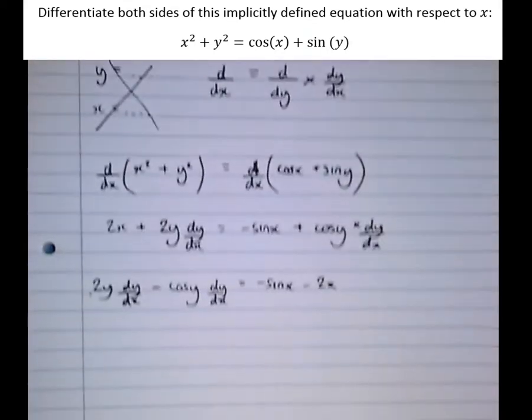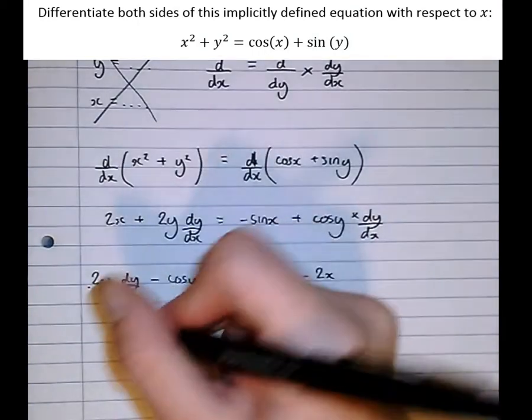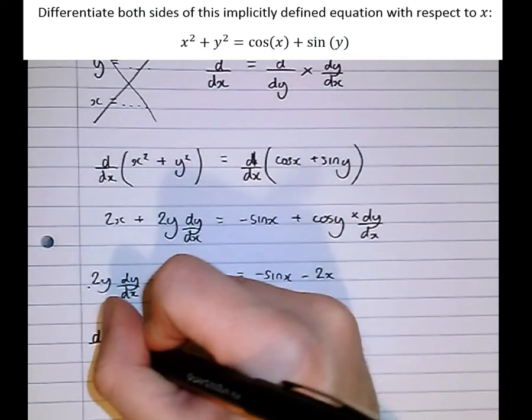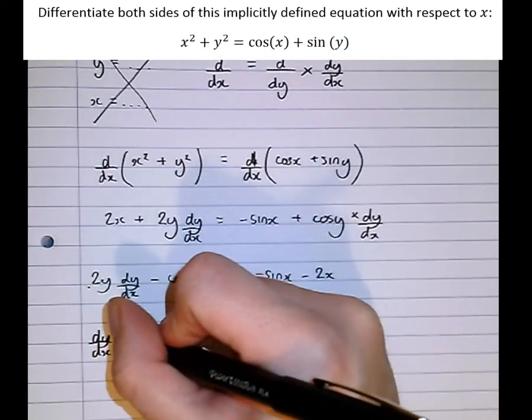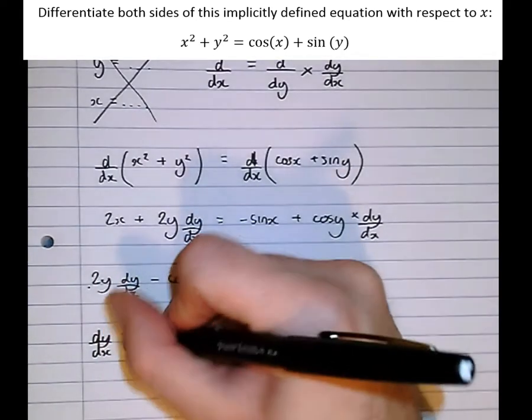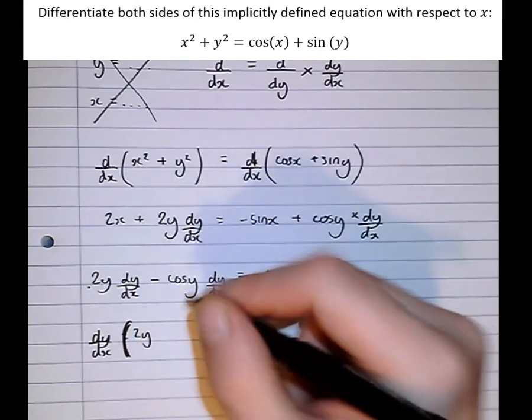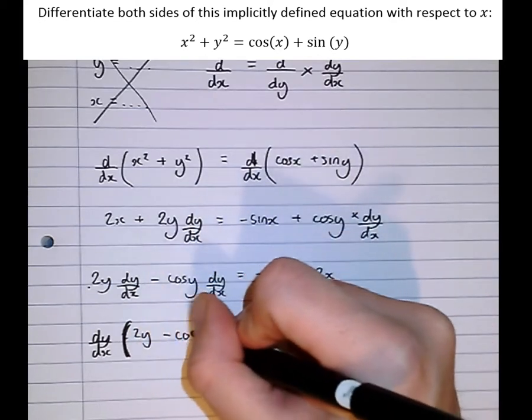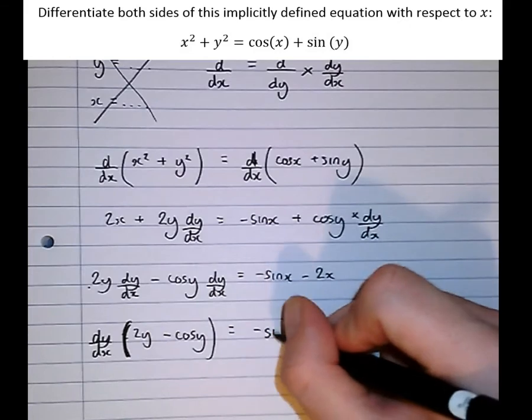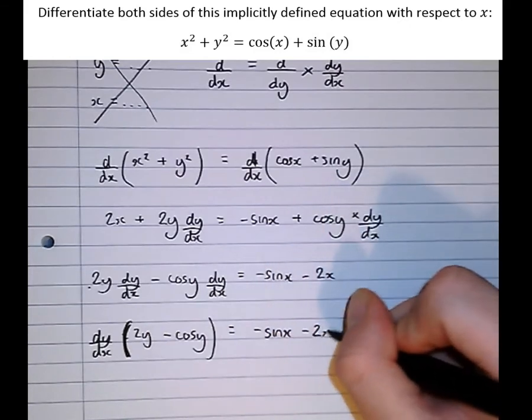Notice that both terms now have a factor of dy/dx in common. So if I take out a factor of dy/dx, dy/dx bracket 2y minus cos(y) equals minus sin(x) minus 2x.